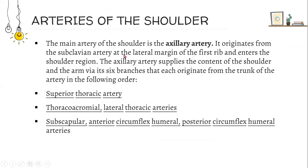Arteries of the shoulder. The main artery of the shoulder is the axillary artery. It originates from the subclavian artery at the lateral margin of the first rib and enters the shoulder region. The axillary artery supplies the content of the shoulder and arm via its six branches, in the following order: superior thoracic artery, thoracoacromial, lateral thoracic arteries, subscapular, anterior circumflex humeral, and posterior circumflex humeral arteries.